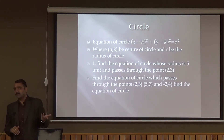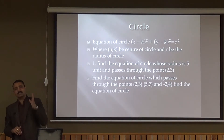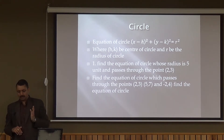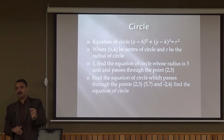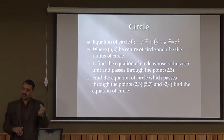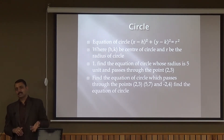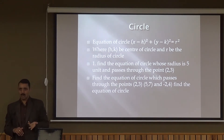We have another example: find the equation of the circle which passes through (2, 3), (5, 7), and (−2, 4). In this case we are not given the center or the radius, so we have to calculate both. We can use either the general equation of the circle or the standard equation of the circle.